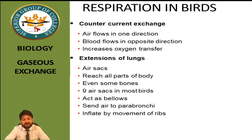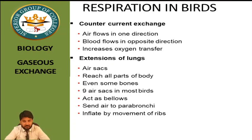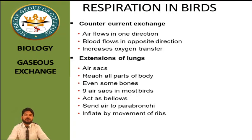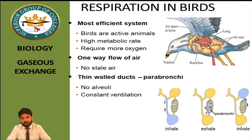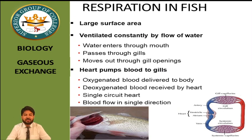Air sacs are extensions of the lungs and are present throughout the whole body of the bird — even inside some of its bones. There are nine air sacs in most birds. They act as bellows, used to lower air pressure. This concludes respiration in birds, frogs, and fish. Hope this is clear. Thank you, Allah Hafiz.